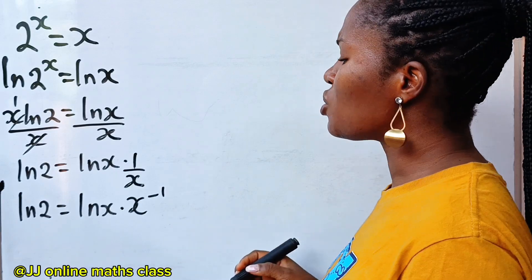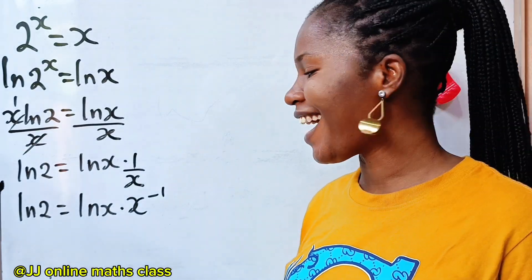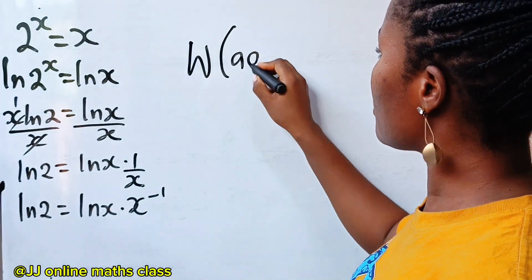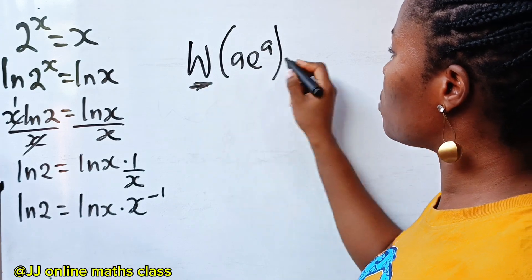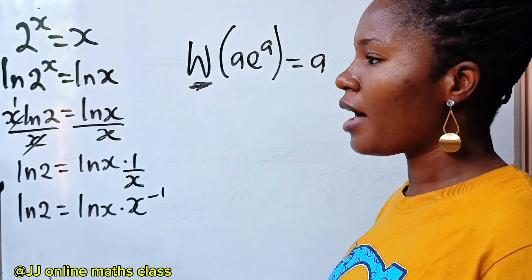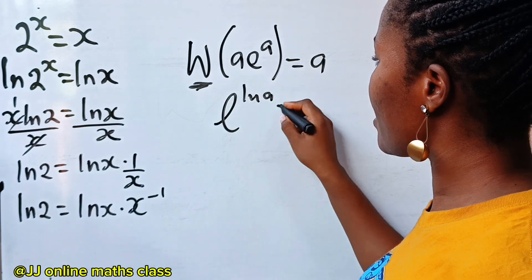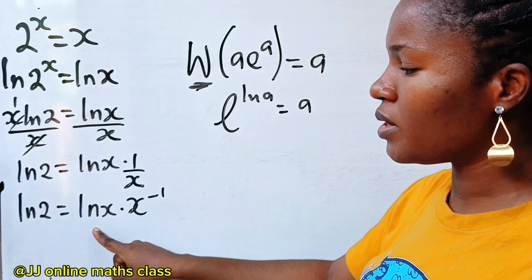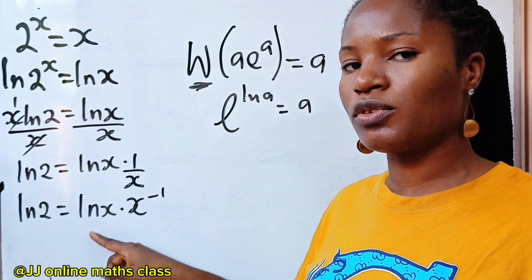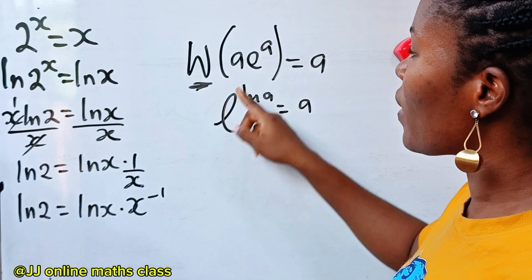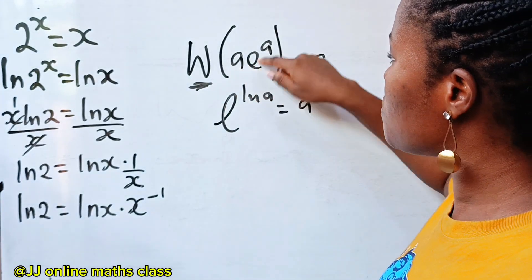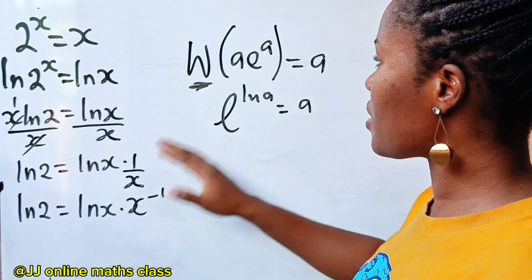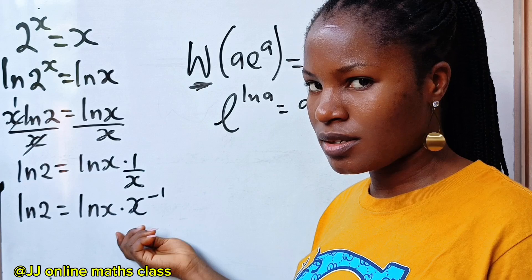Now I want to introduce us to the Lambert W function. This function states that if you have a·e to the power of a, and you apply the Lambert W function, your answer is a. And note that e to the power of ln(A) is equal to A. This is how we introduce e into anything we are solving using the Lambert W function — to make it look like the required form.